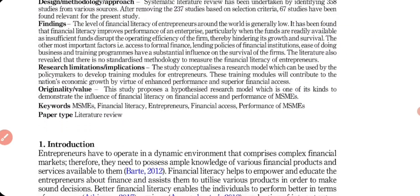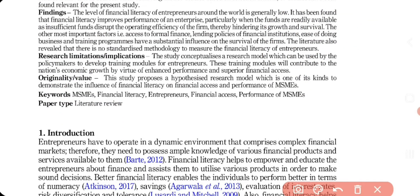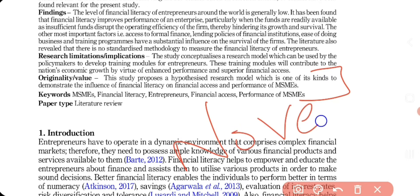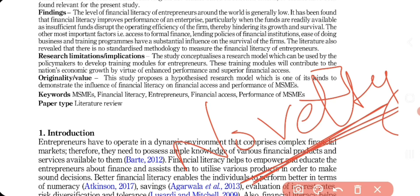The originality or value of the paper is the beauty that brings out the novelty. Every editor and reviewer looks for novelty — what is new in this study, what question you are going to answer. Try to write the originality section in a way that catches the attention of your editor and reviewers.